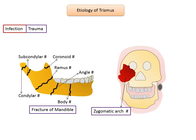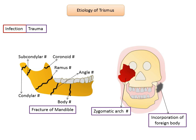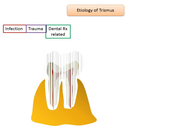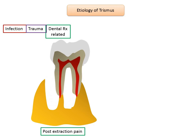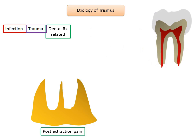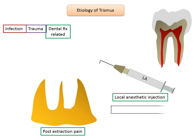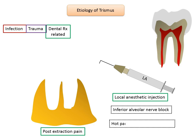Trismus has also been reported due to accidental incorporation of foreign bodies because of external traumatic injury. Dental treatment-related factors such as post-extraction trismus may result from inflammation involving the muscles of mastication or direct trauma to the temporomandibular joint. Another common cause seen in general practice is limited mouth opening occurring two to five days after a mandibular block, attributed to inaccurate needle positioning. Hot packs, stretching exercises using wooden spatulas, and reassurance are usually sufficient for this condition.